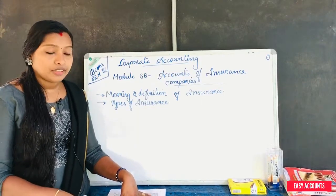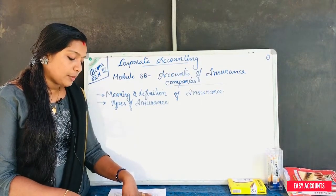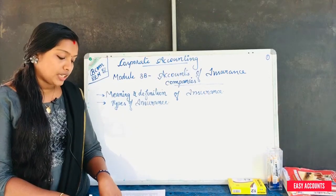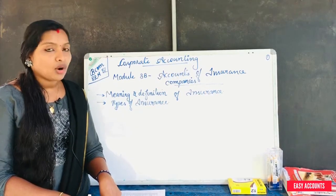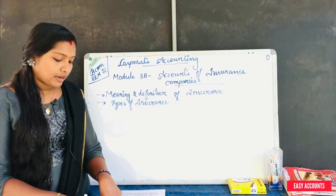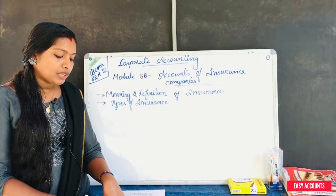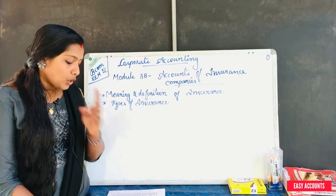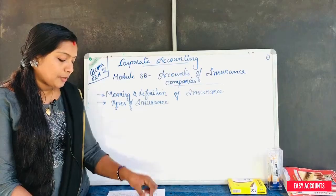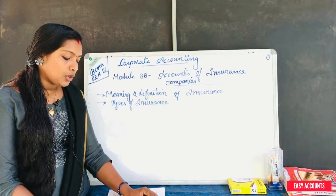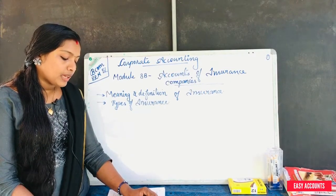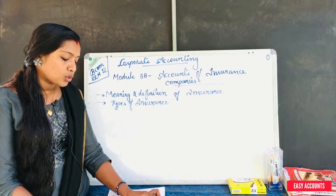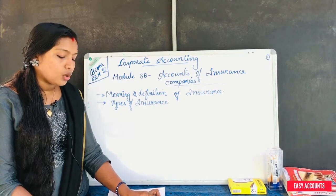The definition of insurance may be defined as: one person, in consideration of a certain sum known as premium, agreed to pay on the happening of an event or on the expiry of a period a sum of money, or to compensate the loss to the other.